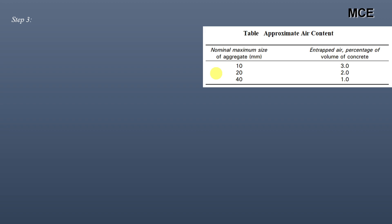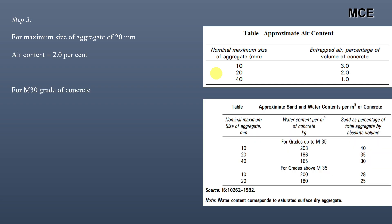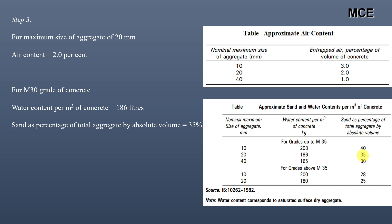For a maximum aggregate size of 20 mm, air content is 2%. For M30 grade concrete with nominal maximum aggregate size of 20 mm, the approximate water content is 186 kg/m³ and sand as a percentage of total aggregate by absolute volume is 35%.